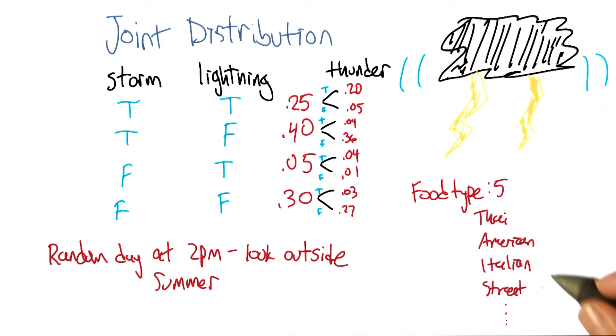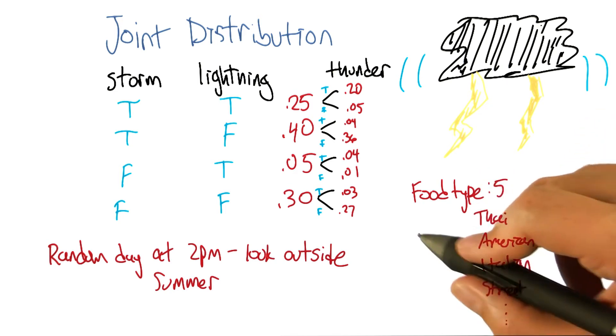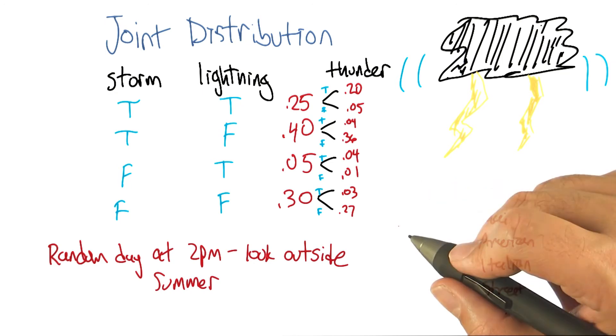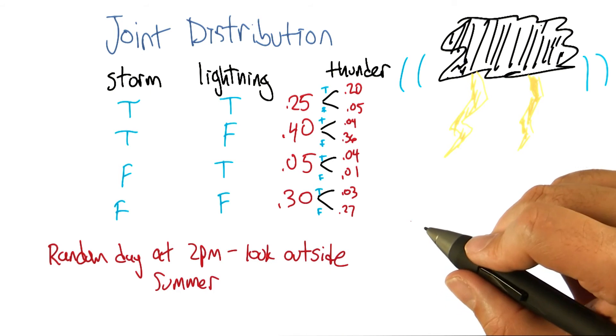Right, and so if we add a variable like that, it's going to multiply the number of probabilities that we need by five. So this is going to get really big really fast. So wouldn't it be nice if we had a more convenient way of writing down this distribution? Yeah, it would be nice.